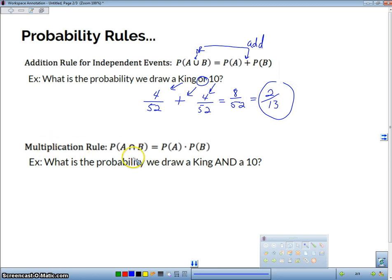All right. The multiplication rule says that if we have the probability of A and B happening, we're going to multiply those probabilities. And this is either independent or dependent, it works the same way. So what is the probability we draw a king and a 10? The probability that we draw a king is 4 out of 52. The probability that we draw a 10 is 4 out of 52. And the and means multiply. So I'm going to multiply those together. It's easiest if we simplify these to 1/13 times 1/13, which gives me 1 over 169.